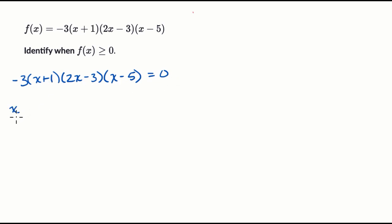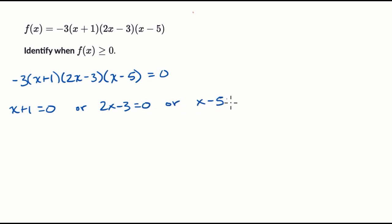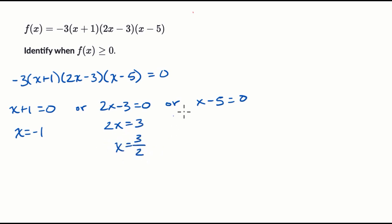So we know that x plus one equals zero, or two x minus three equals zero, or x minus five equals zero. In the first one, subtract one from both sides: x equals negative one. Here, add three to both sides and divide by two: x equals three halves. And over here, add five to both sides: x equals five. So these are the zeros — this is where our function equals zero.